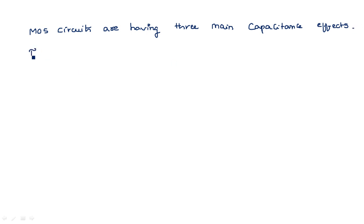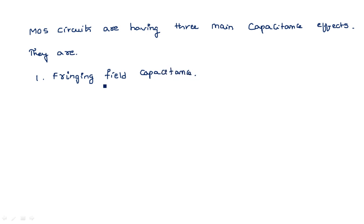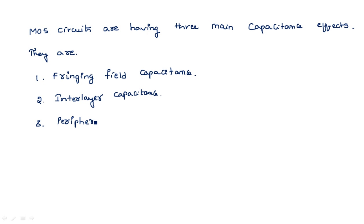The three capacitance effects are: first, fringing field capacitance — where fringe means edge; second, interlayer capacitance; and third, peripheral capacitance. These are the three different capacitances which generally exist in the entire MOSFET circuits.